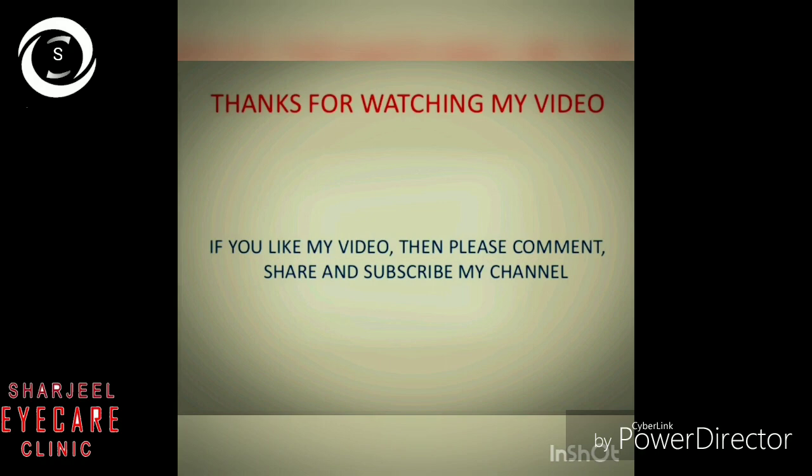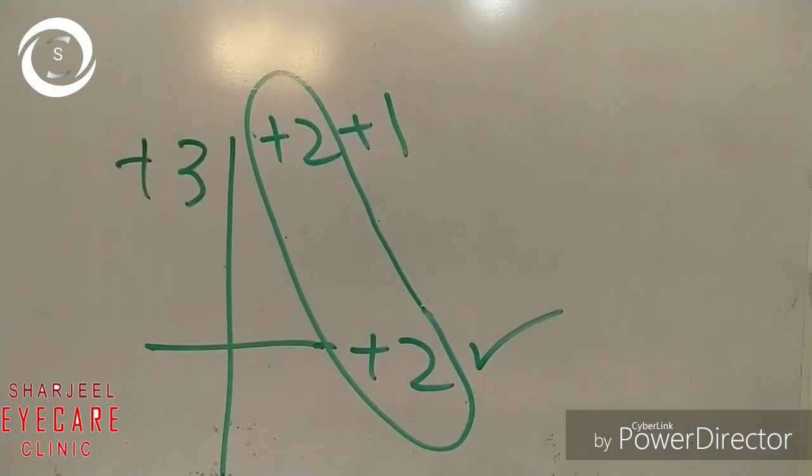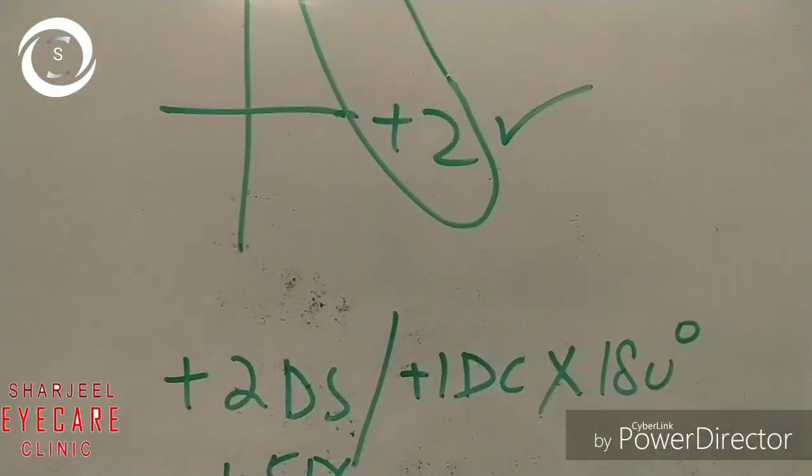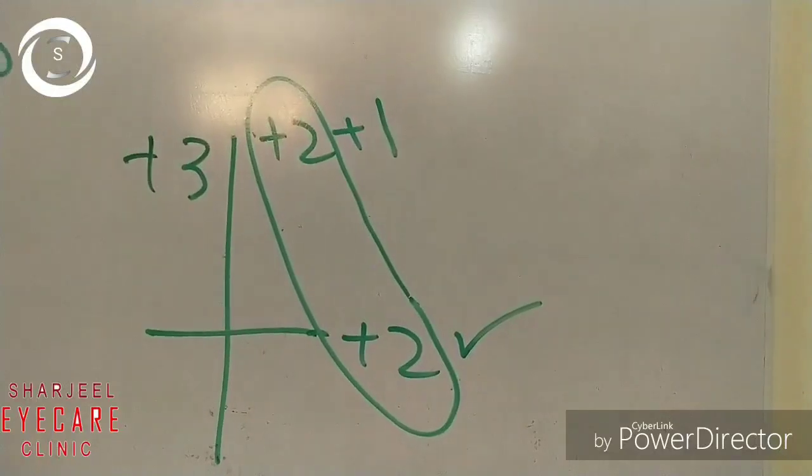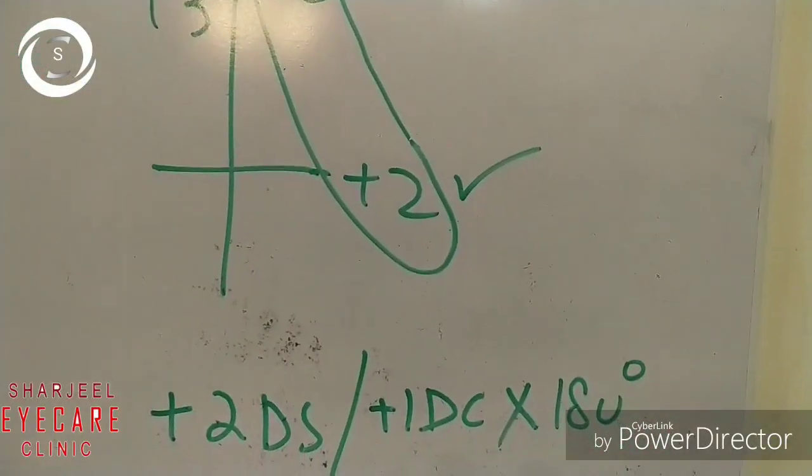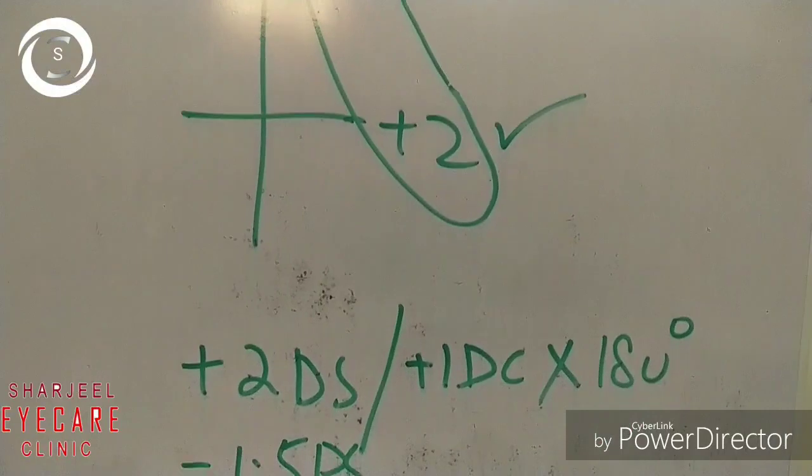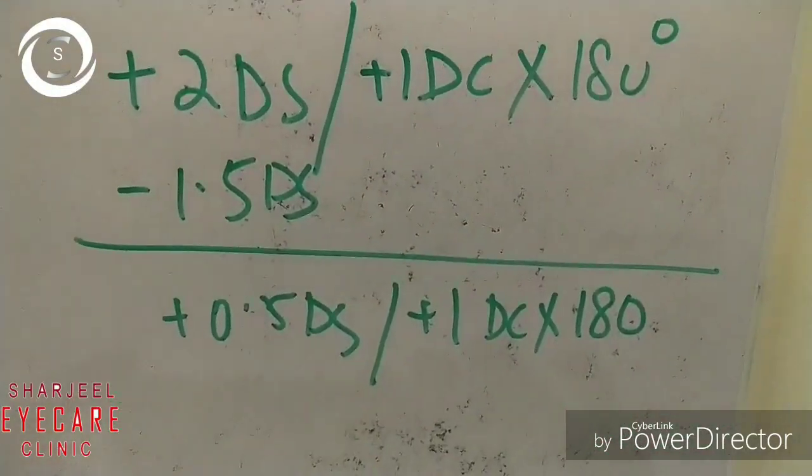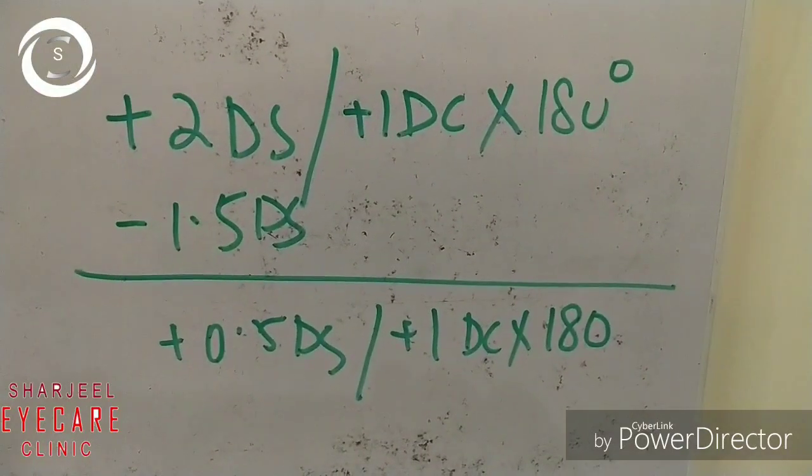Today we are presenting the fourth video of the retinoscopy series on transposition. But before that, we will review the previous method of retinoscopy. If there is a plus three neutralization of the vertical reflex and plus two horizontal, you have to take the plus two that is common in both axes: plus two diopter sphere, and then the remaining plus one diopter cylinder at 180 degrees.